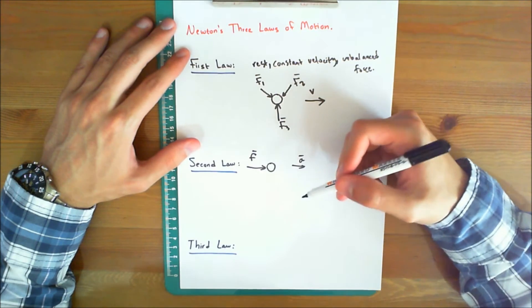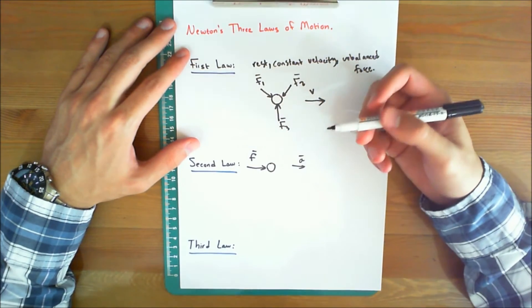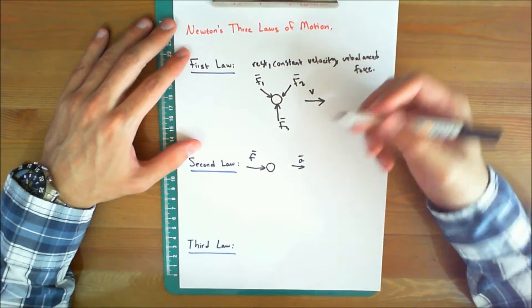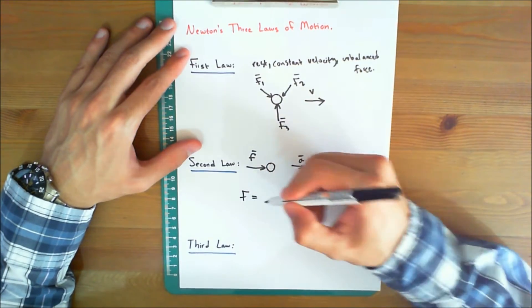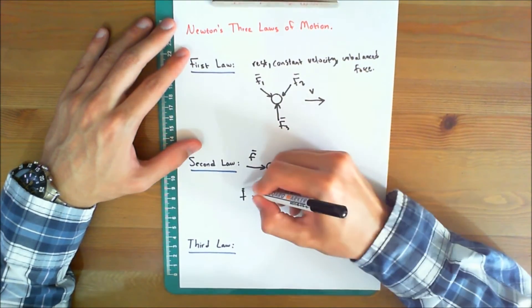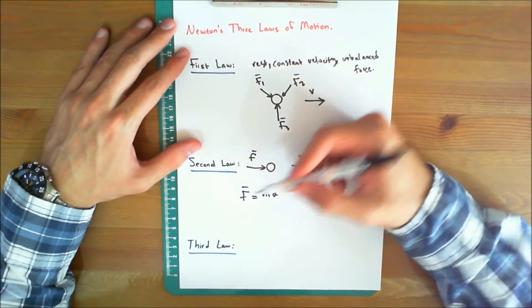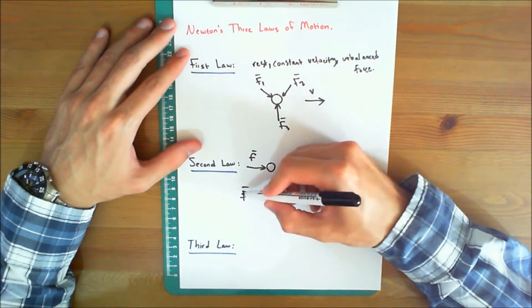Now if F is applied to a particle of mass m, this law may be expressed mathematically as the famous formula F equals mA. And remember that both F and A are vectors, that's why I'm putting these arrows over here, or you can put them in bold.